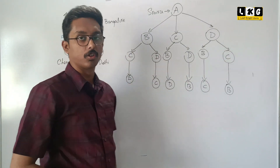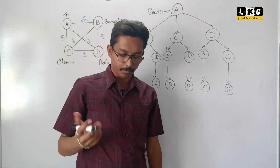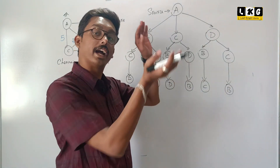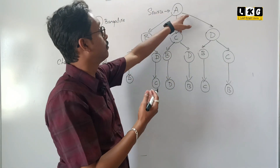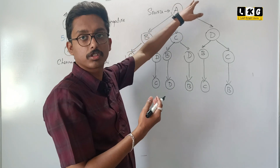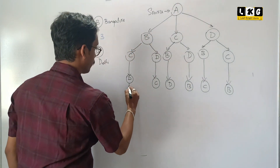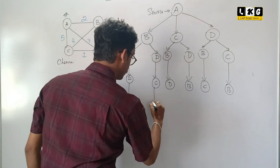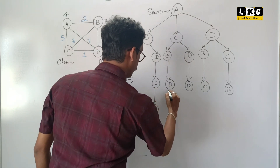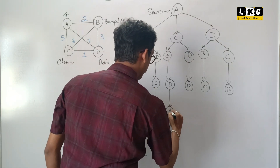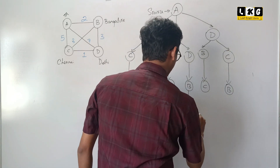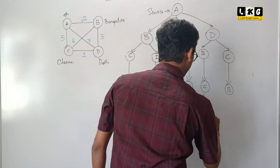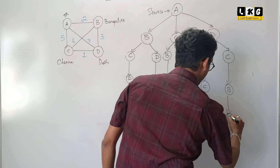After reaching all the other nodes, the problem statement says he needs to move back to his home — that is, back to the source A. From D, he will go back to A. From C, he will go back to A. From D also, he will go back to A. From B, same thing — go back to A. From C, he will go back to A. And from B also, he will go back to A.